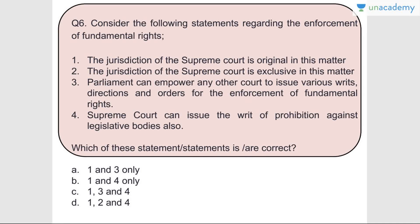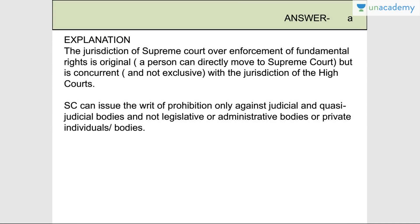Question number six: Consider the following statements regarding enforcement of fundamental rights. The jurisdiction of the Supreme Court is original in this matter - correct. The jurisdiction of the Supreme Court is exclusive - wrong. Parliament can empower any other court to issue directions for enforcement of fundamental rights - correct. The Supreme Court can issue the writ of prohibition against legislative bodies - wrong. Answer is A, one and three are correct. The Supreme Court's jurisdiction is original but concurrent, not exclusive with the High Courts. The Supreme Court can issue the writ of prohibition only against judicial and quasi-judicial bodies, not legislative or administrative bodies.